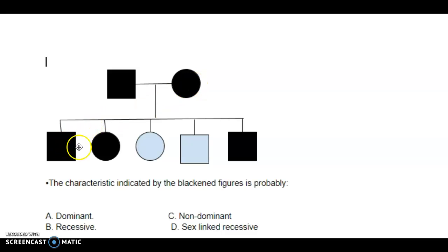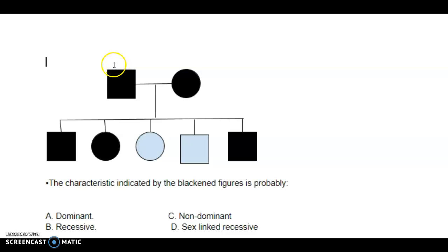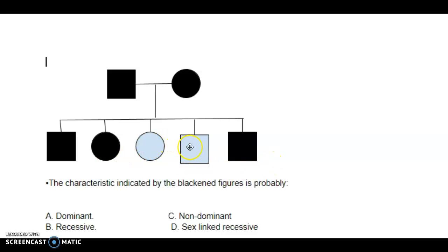Both parents are affected, and one, two, three out of five children are affected. If it were a recessive trait, then dad would be little letter, little letter, and mom would be little letter, little letter — so all they could pass on would be little letters, meaning all offspring would have the trait. But we have this daughter and this son who do not have the trait, so we know recessive is not an option.